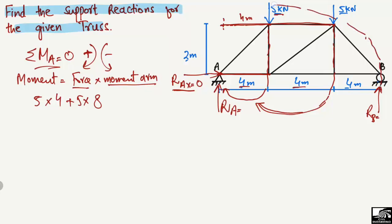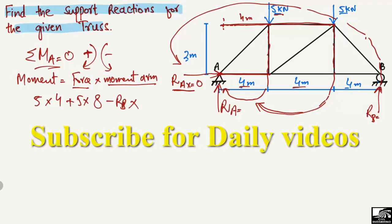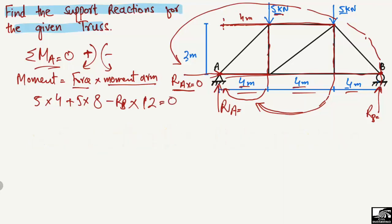The reaction RB also creates a moment about point A, but in the anti-clockwise direction, so it is taken as negative. The moment arm from point B to point A is 4 + 4 + 4 = 12 meters. So the moment due to RB is −RB × 12.